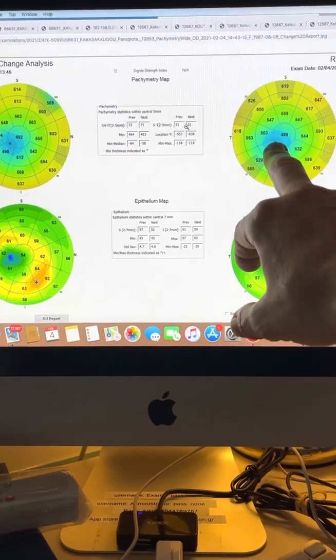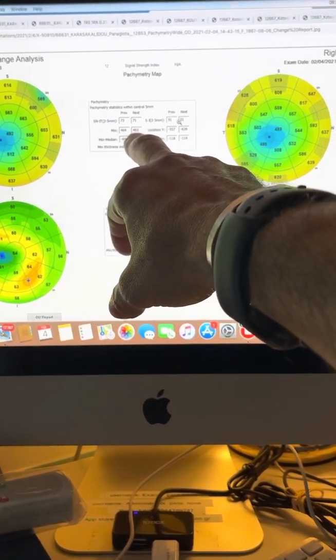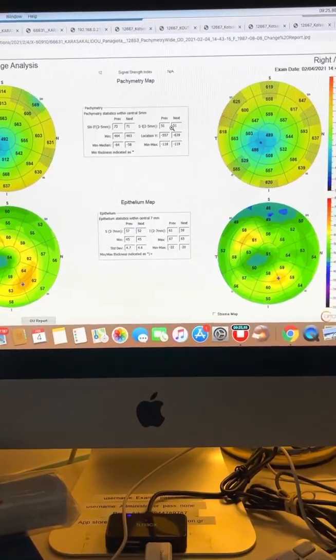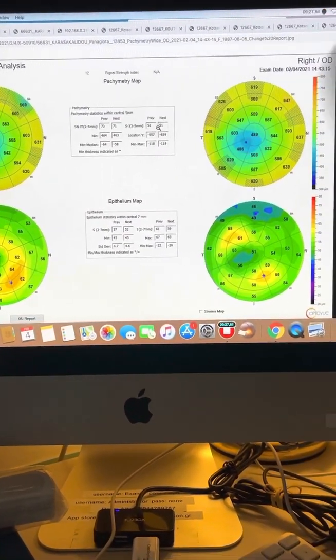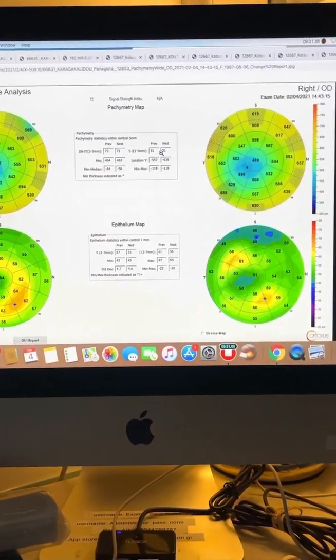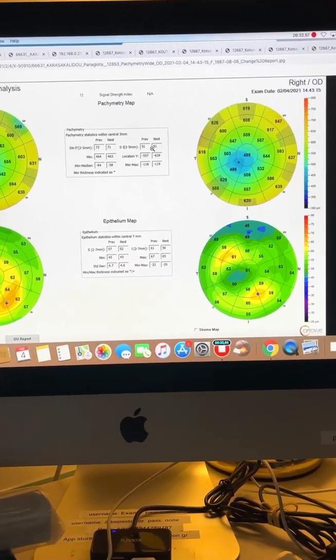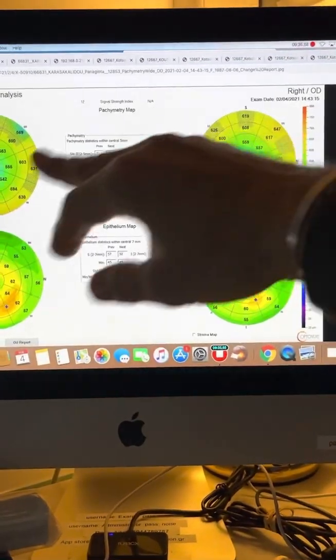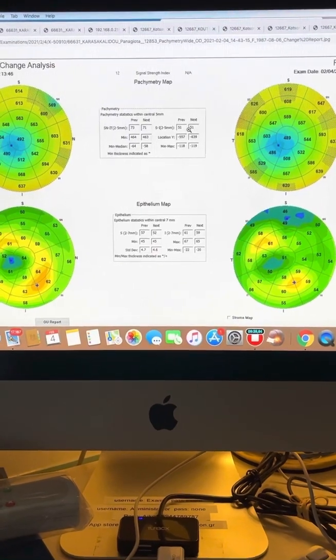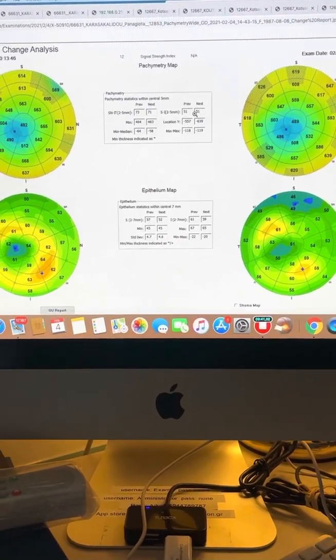While the minimum corneal thickness has remained the same, 463. So this tells us that although the Pentacam maps look worse, probably because we have this shift in epithelium, there's no progression of the keratoconus. The actual corneal thickness is the same. The overall corneal thickness pattern is the same. Her vision is the same. She's not rubbing her eyes. And this is very reassuring.